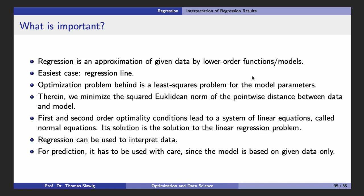Summarizing: regression is an approximation of given data by a low order function or model, with the simplest case being a line. The optimization problem is a least squares problem for the model parameters — we minimize the Euclidean norm squared of the pointwise distance between the data and the model. Applying optimality conditions gives a system of linear equations called the normal equations, which we solve to obtain the solution. With the results, we can interpret data, but must be careful using them for prediction, as results can be a good estimation, an overestimation, or an underestimation.